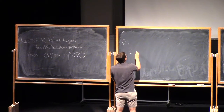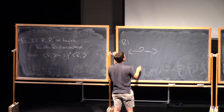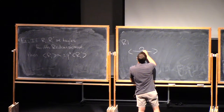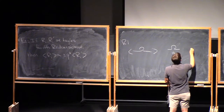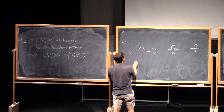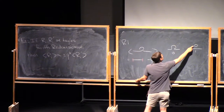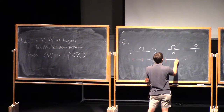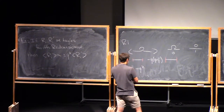For the Reidemeister 1 move, I have to evaluate the bracket of a tangle that looks like a small curl. There are just two different resolutions. The zero resolution looks like a straight strand with a circle, and the one resolution looks like a straight strand. So the bracket here is: this straight-with-circle term — I can erase the circle at the cost of (q + q^{−1}) — minus q times the straight strand. We see that one term cancels, and I'm left with −q^2 times the straight strand.